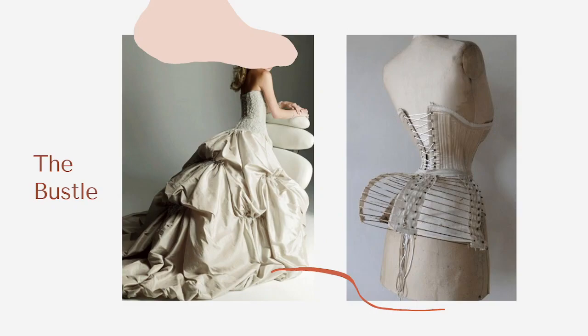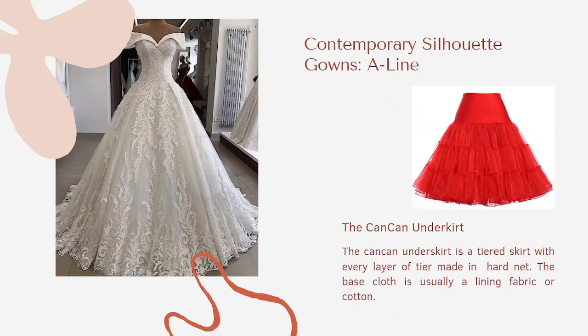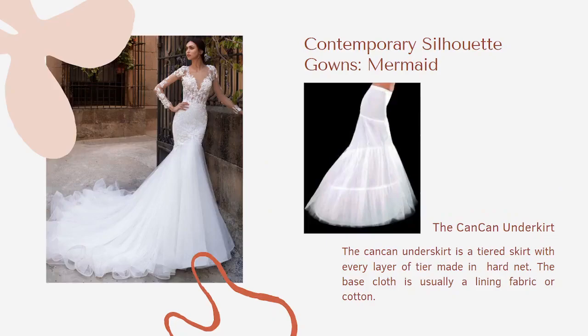Here you can see the picture of the Victorian style bustle cage, which is flat everywhere except at the back. Here you can see the modern style of underskirt which has layers of hard net stitched into it, giving an A-line silhouette to the gown. You can use these can-can underskirts to create any kind of interesting silhouettes. Here you can see a picture of a mermaid style can-can skirt which gives a mermaid silhouette to the gown.